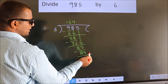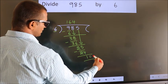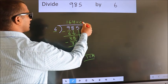No more numbers to bring down. So we stop here. This is our remainder. This is our quotient.